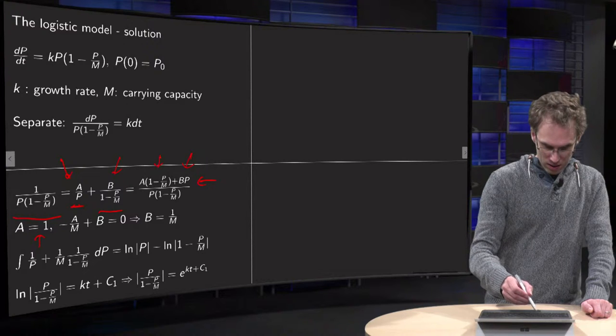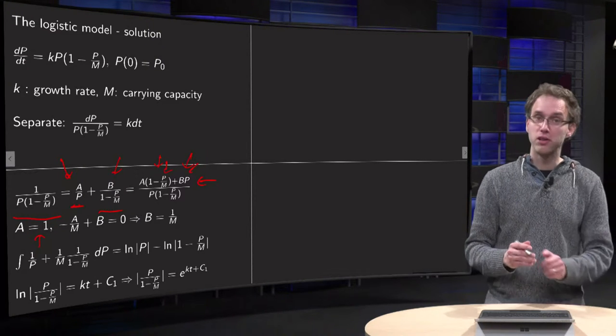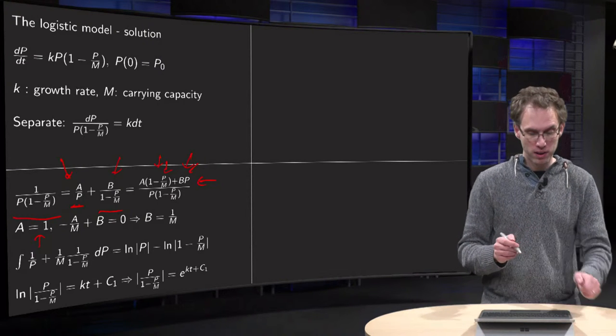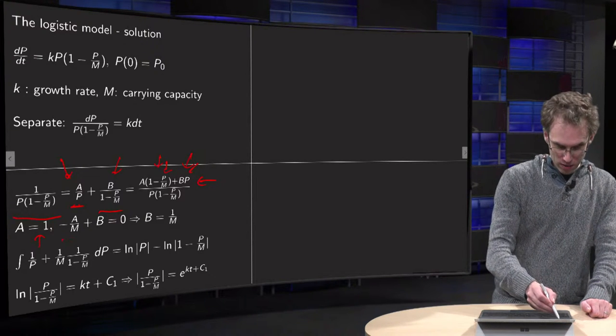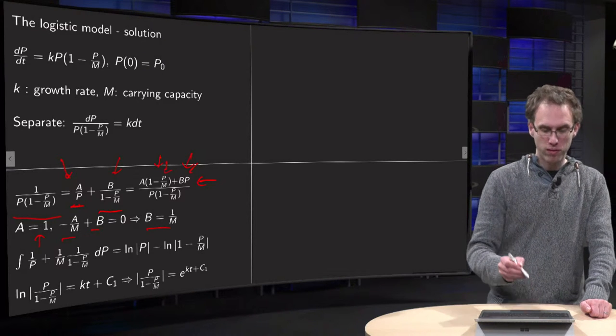And this term and that term have to cancel out the terms proportional to P, so minus A over M plus B has to equal 0. A being equal to 1 means B equals 1 over M.